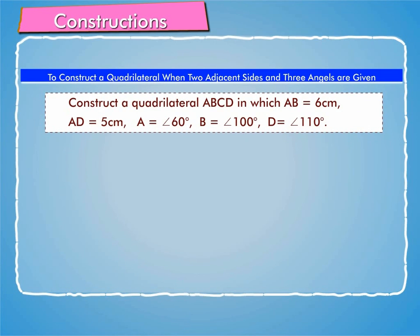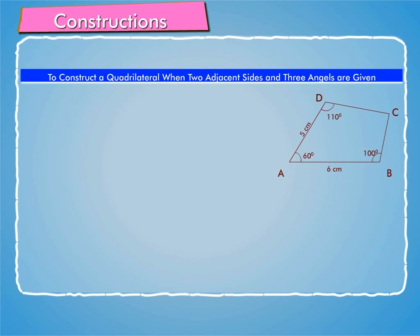Let us construct a quadrilateral ABCD in which AB is equal to 6 cm, AD is equal to 5 cm, angle A is equal to 60 degrees, angle B is equal to 100 degrees, angle D is equal to 110 degrees. To construct this, we follow these steps.